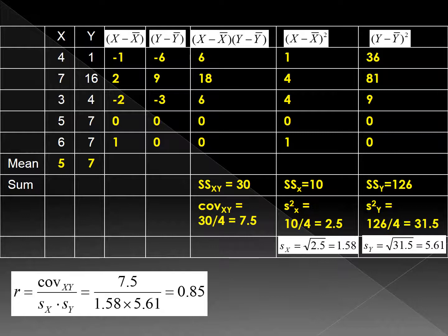You do the same thing for y. For (y minus y-bar) squared, you will have 36, 81, 9, 0, 0. Add them together: SS_Y is 126. The variance of y is 126 divided by 5 minus 1, giving 31.5. Then you take the square root of the variance — that is the square root of 31.5 — giving a standard deviation of y of 5.61.